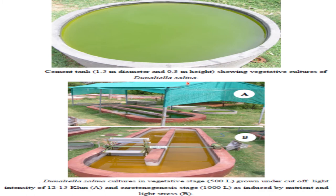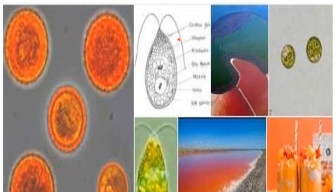This is the semi-circular carboy pond and this is the growth pond with the agri-shade net provided over the raceway pond. This is the carotogenesis stage of Dunaliella where no shade is provided. You can see the green culture has turned into the carotogenesis stage producing more beta-carotene — the cells turn orange-red colored in the carotogenic stage under stress condition.